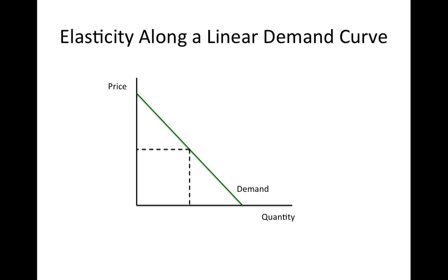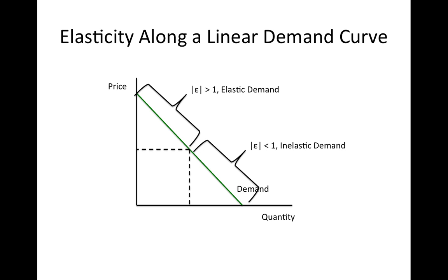The price elasticity of demand will change along a linear demand curve. This is because, although the slope of the line is constant, the ratio of price to quantity changes as you move down the curve. At the top of the curve, the price is high and the quantity is small, so the ratio of price to quantity is large. Thus, at this point on the curve, the elasticity is greater than 1 in absolute value and demand is elastic. At the bottom of the curve, price is small and quantity is large, so the ratio of price to quantity is small and the absolute value of the elasticity is less than 1, making demand inelastic. The absolute value of the elasticity will be exactly 1 at the midpoint of the curve.